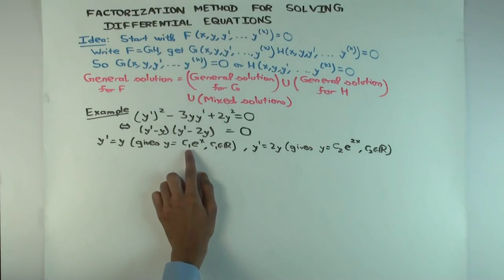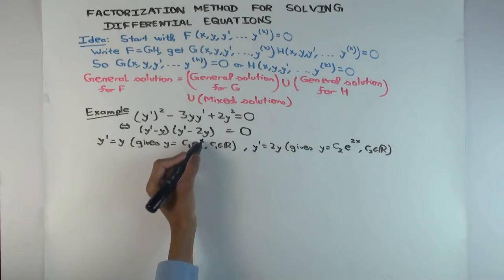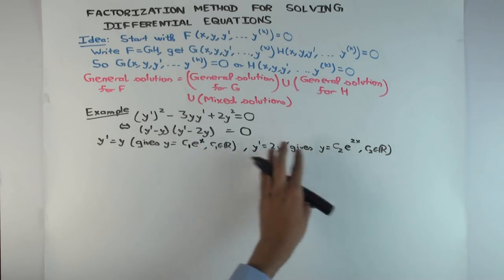But if y is zero, in either of these solutions that will force c₁ to be zero, because this is never zero. And c₂ will also be zero, which means that the whole function is the zero function. But the zero function is already included as a pure solution.